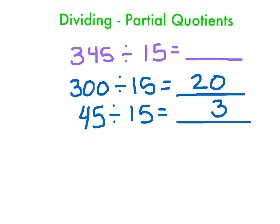So then what I'm going to do is I'm just going to add, trying to find this block right here. I'm going to add my 20 and 3. So 345 divided by 15 is going to be 23.